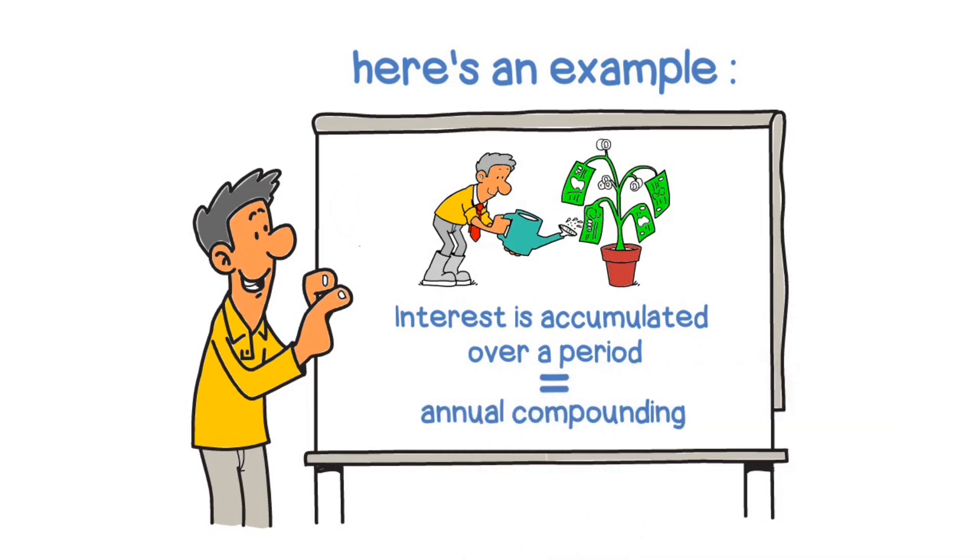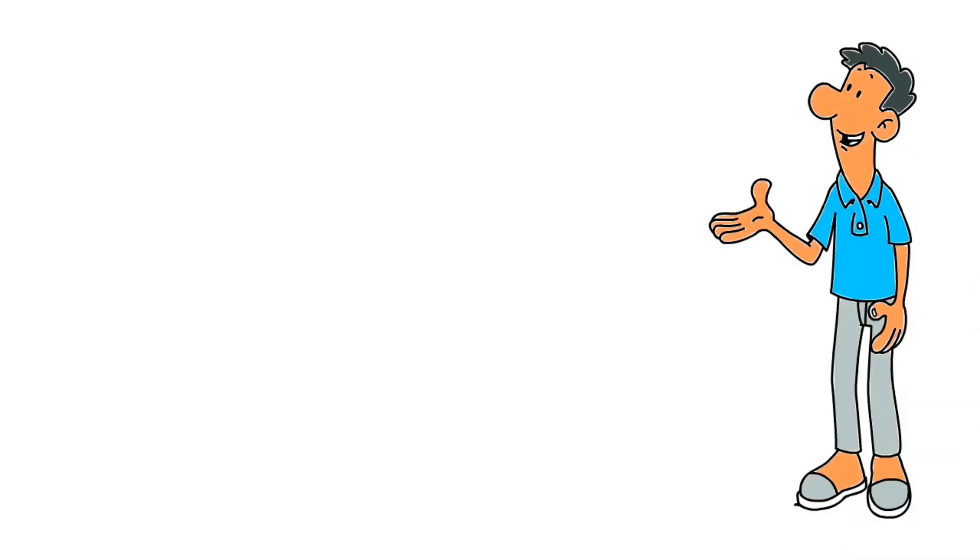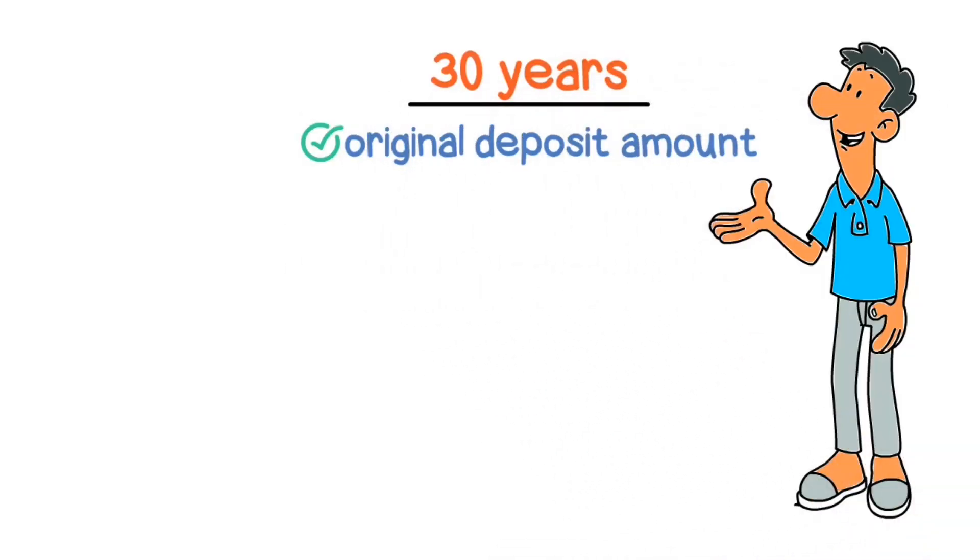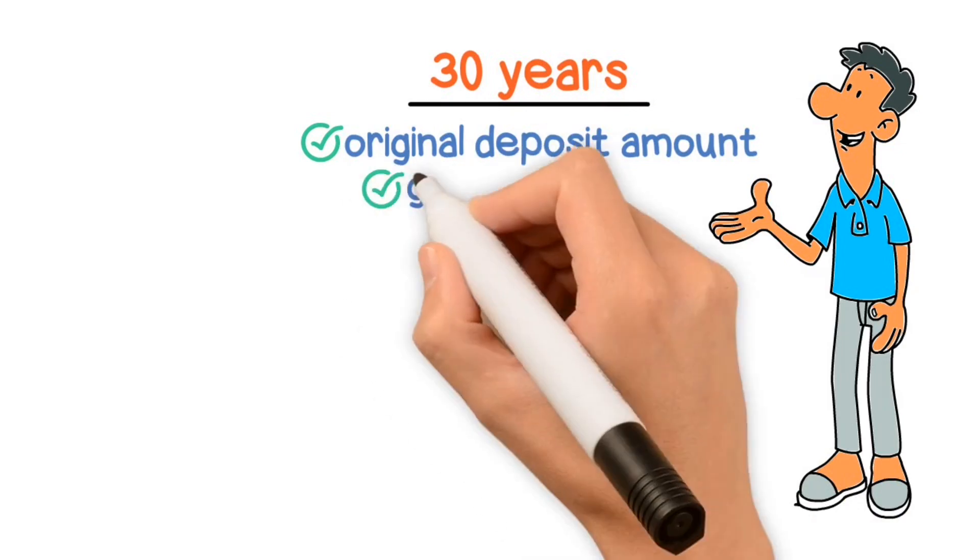If you leave the money for a period of 30 years, the interest rate gets applied to the original deposit amount and the interest earned in year one, and so it goes on annually.